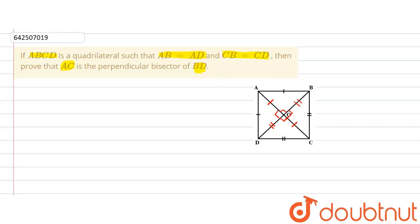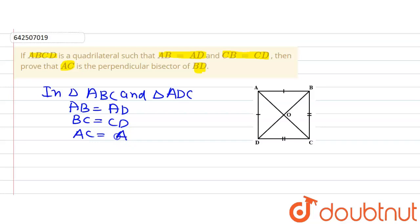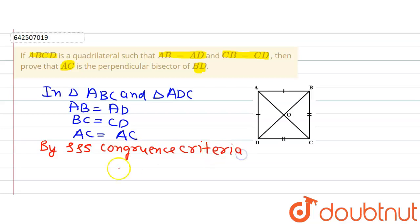We are going to use congruency to prove this. In triangle ABC and triangle ADC, we find that AB equals AD, BC equals CD, and side AC is common in both triangles. So by the Side-Side-Side congruence criteria, triangle ABC is congruent to triangle ADC.